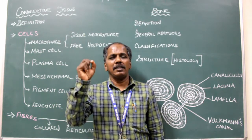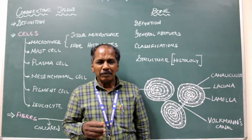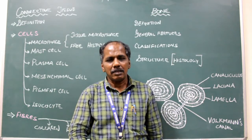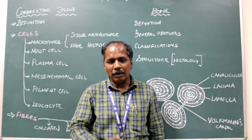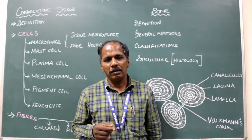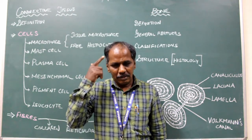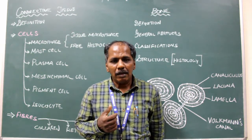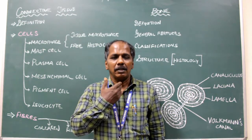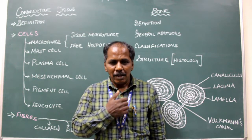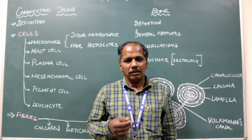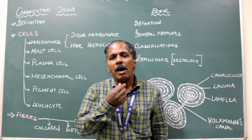What is axial skeleton? The bones present in the central axis, that is the midline or central axis of the body, constitute the axial skeleton. Examples include: skull, vertebra or vertebral column (there are 33 vertebrae), sternum, ribs, and hyoid bone.